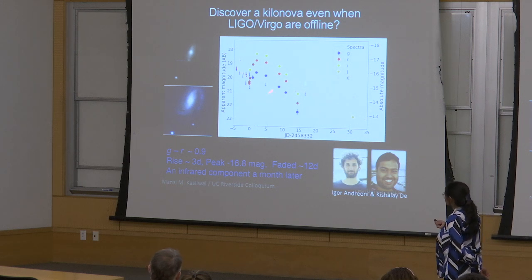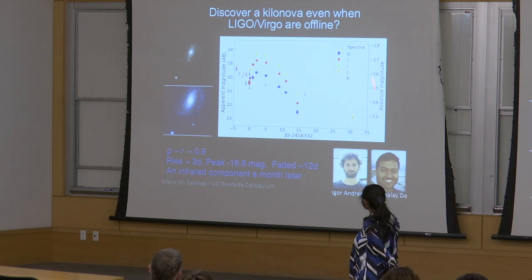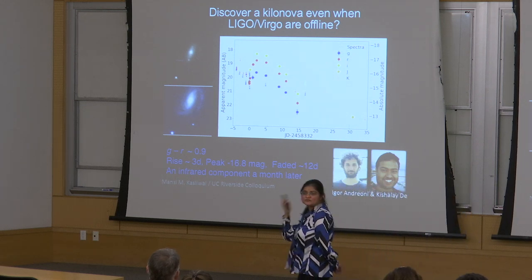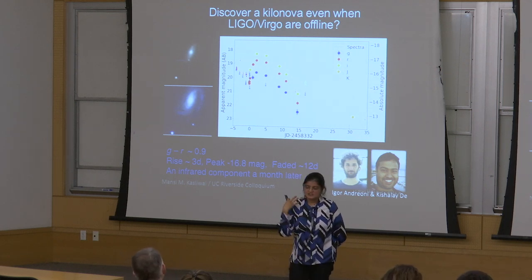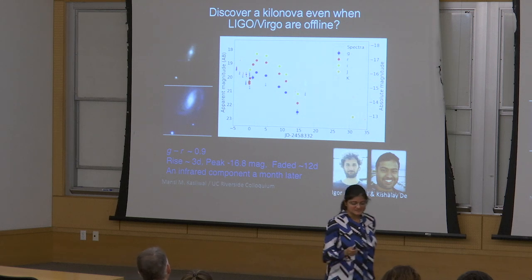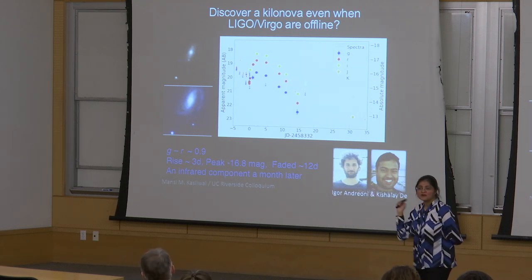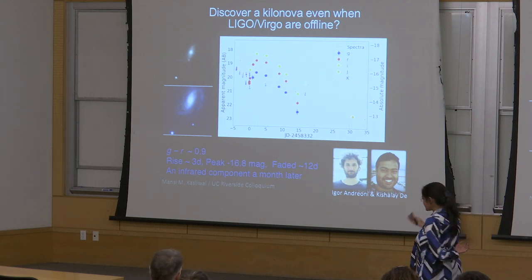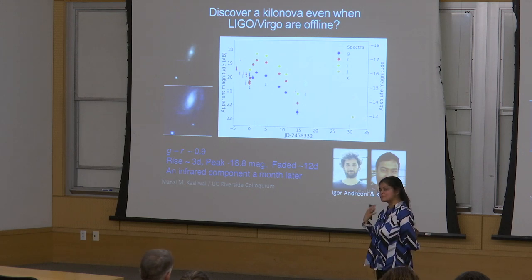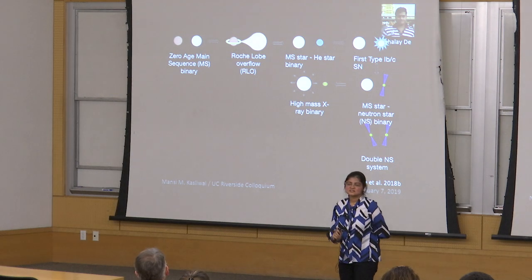We are starting to find events where the optical emission dies off in a few days but the infrared emission lasts for more than a month. There's data from the Keck telescope where a month later we are detecting something long gone in the optical. There's a question mark on the origin of each event, but the point is you can search for the reddest transients in the optical stream to try to find kilonovae even when the gravitational wave interferometers are offline.